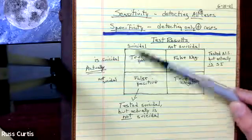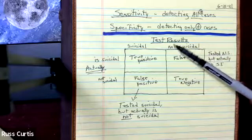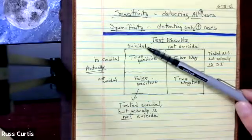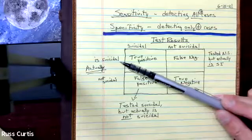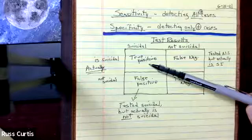So this is actuality here. This is what the test result is telling us. So here are the test results saying, yes, they are suicidal, and based on our intake and our interview and all that, we know that they actually are suicidal, then that would be considered true positive.